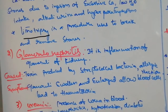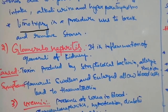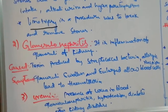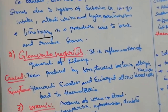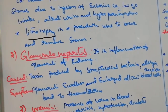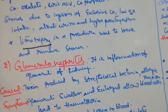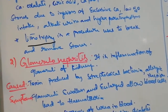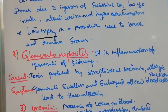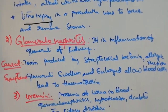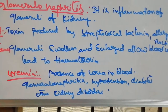The next disease is glomerular nephritis — inflammation of the glomerulus of the kidney. It is caused by toxins produced by Streptococcus or allergic reactions. Symptoms include swelling of the glomerulus and enlargement, causing blood cells to pass into the urine, a condition called hematuria.